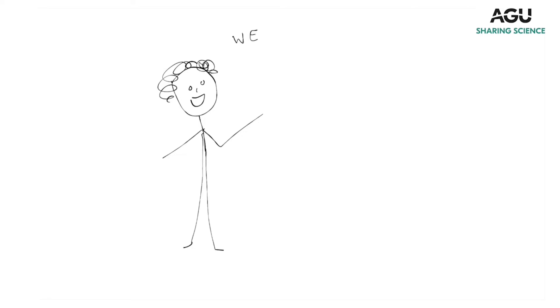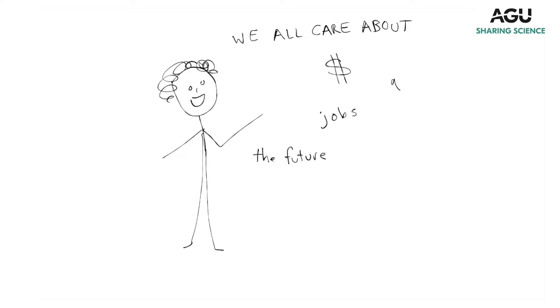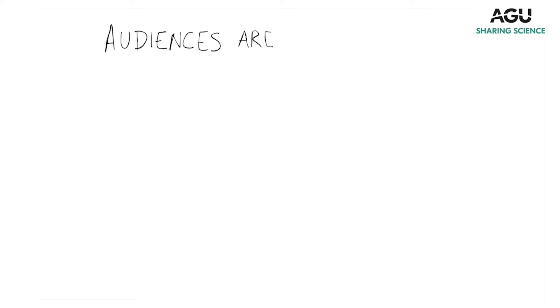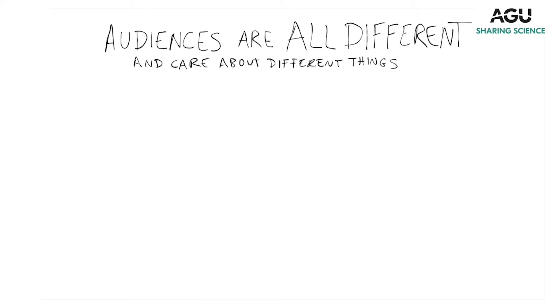A really great way to think about your audience is to think about what they care about. One way to do this is to frame your message in these 'we all care about' statements — things like money or jobs, the future, quality of life, children, health. There's always something you can relate to your audience on. All audiences are different and they care about different things, and that's OK, but it's important to identify what those things might be, because that's how you connect with them.